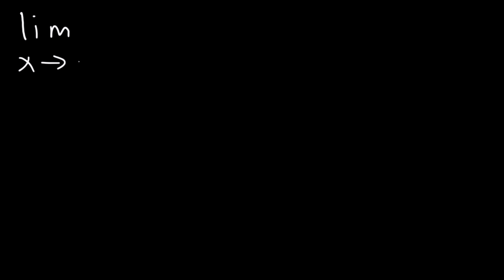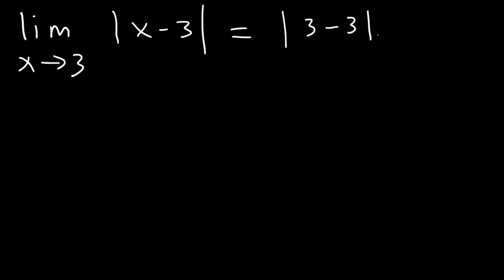What is the limit as x approaches 3 of the absolute value of x minus 3? For this problem, we can simply use direct substitution — there's nothing stopping us from doing so. This is simply the absolute value of 3 minus 3, which is the absolute value of 0, and that is 0.